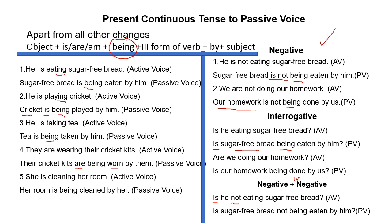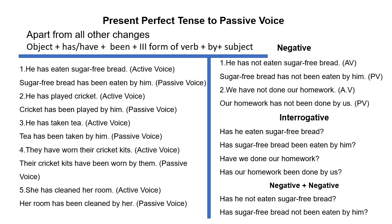Interrogative میں: 'Is he eating sugar free bread?' → 'Is sugar free bread being eaten by him?' 'Are we doing our homework?' → 'Is our homework being done by us?' Present definite tense میں is/am/are کا اضافہ ہوتا تھا، لیکن جب 'ing' والا verb ہو تو passive voice میں 'being' کا اضافہ کیا جاتا ہے — یہ اہم فرق یاد رکھیں۔